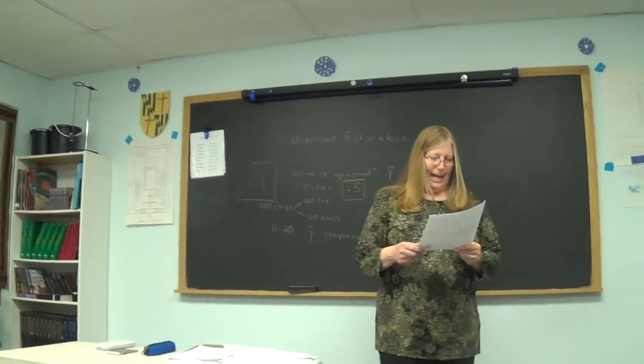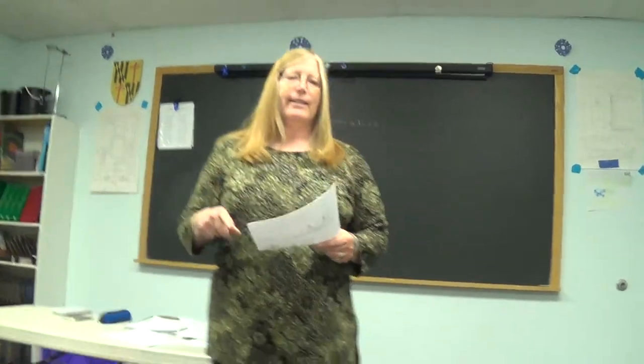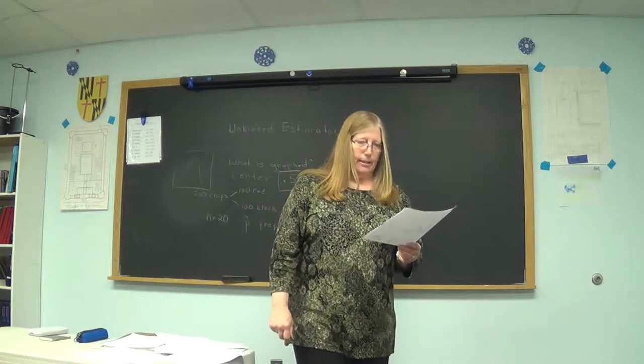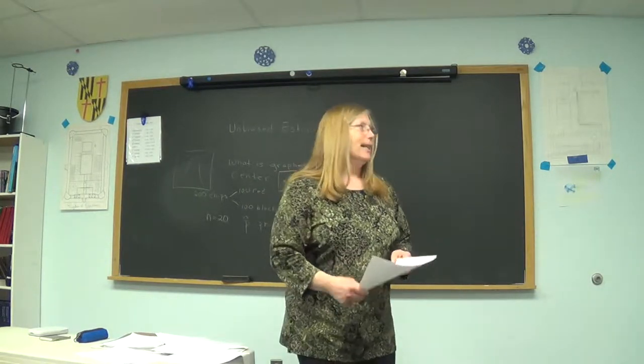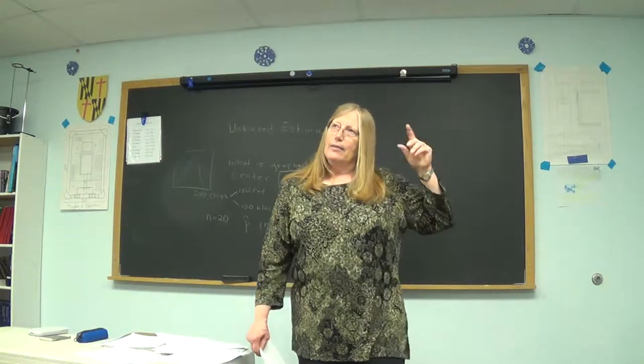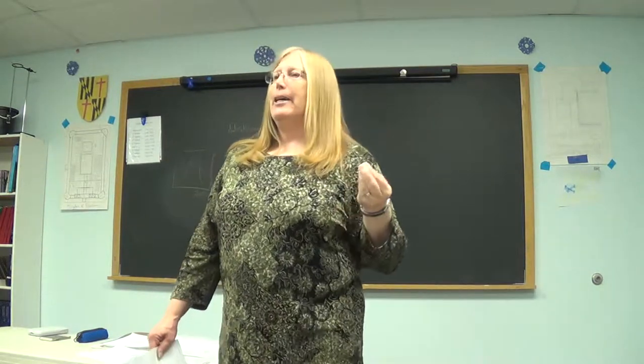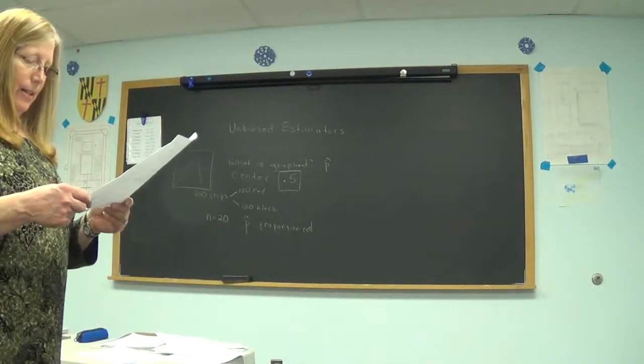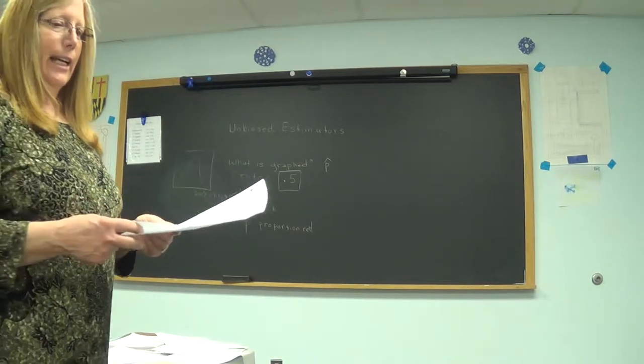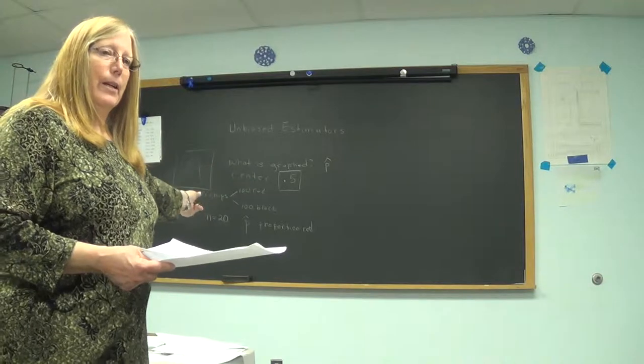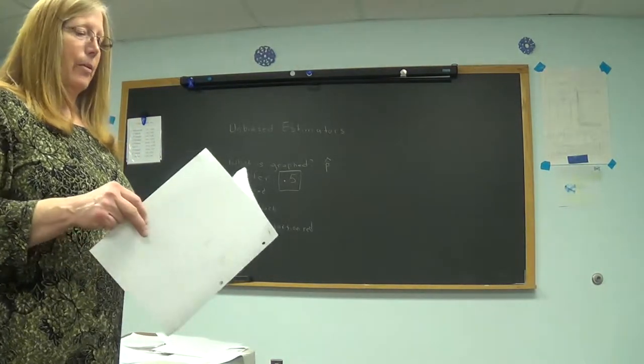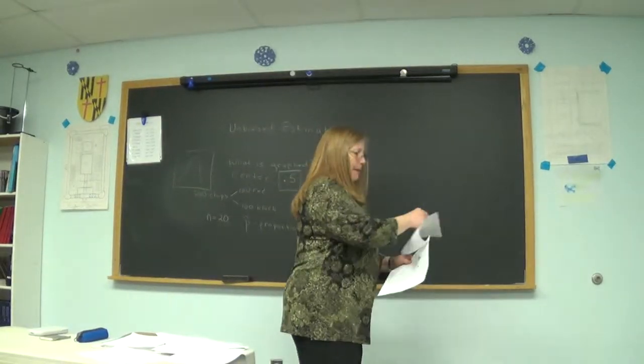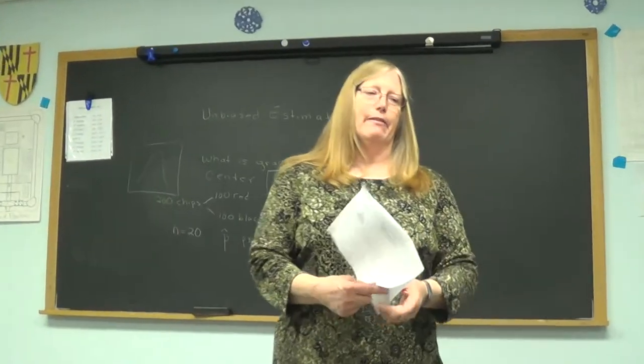All right. So P hat from a simple random sample is unbiased. And you can fill that right in. It's very important. But what about all the other ones we had listed on our box? What about the mode? What about the median? What about IQR? What about Q1, Q3, range? What about variance? What about standard deviation? Are they unbiased statistics? So we're going to answer the question for some of those. We'll see which ones pop up in our chapter. We're not going to answer that for every single one.